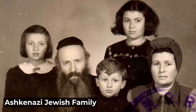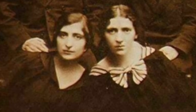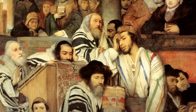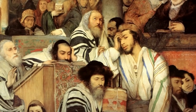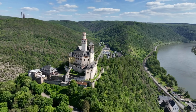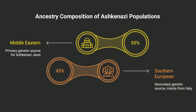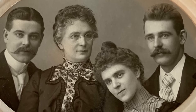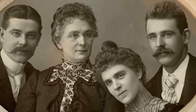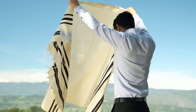Ashkenazi Jewish populations, who comprise the largest single branch of world Jewry, present a unique genetic profile that reflects both their Levantine origins and their complex demographic history in Europe. The formation of Ashkenazi Jewish populations appears to have occurred through the migration of small founder populations from the Mediterranean region, likely via Italy, into the Rhineland and other areas of medieval Europe during the first millennium AD. Genetic analysis reveals that Ashkenazi populations derive approximately 50–60% of their ancestry from Middle Eastern sources, with the remainder contributed by southern European populations, particularly those from the Italian peninsula.